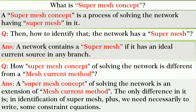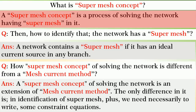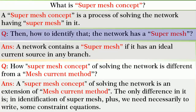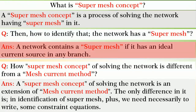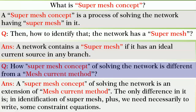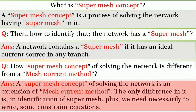A super mesh concept is a process of solving the network having super mesh in it. A network contains a super mesh if it has an ideal current source in any branch. A super mesh concept of solving the network is an extension of a mesh current method. The only difference is in identification of the super mesh, plus we need necessarily to write some constraint equations.